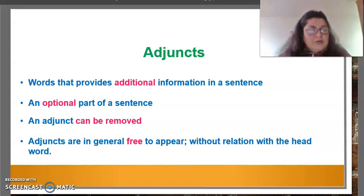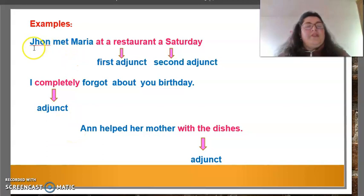Now, we are going to review some examples. The first example: John met Maria at a restaurant on Saturday. In this case, we have two adjuncts. The first adjunct is at a restaurant, and the second adjunct is Saturday.